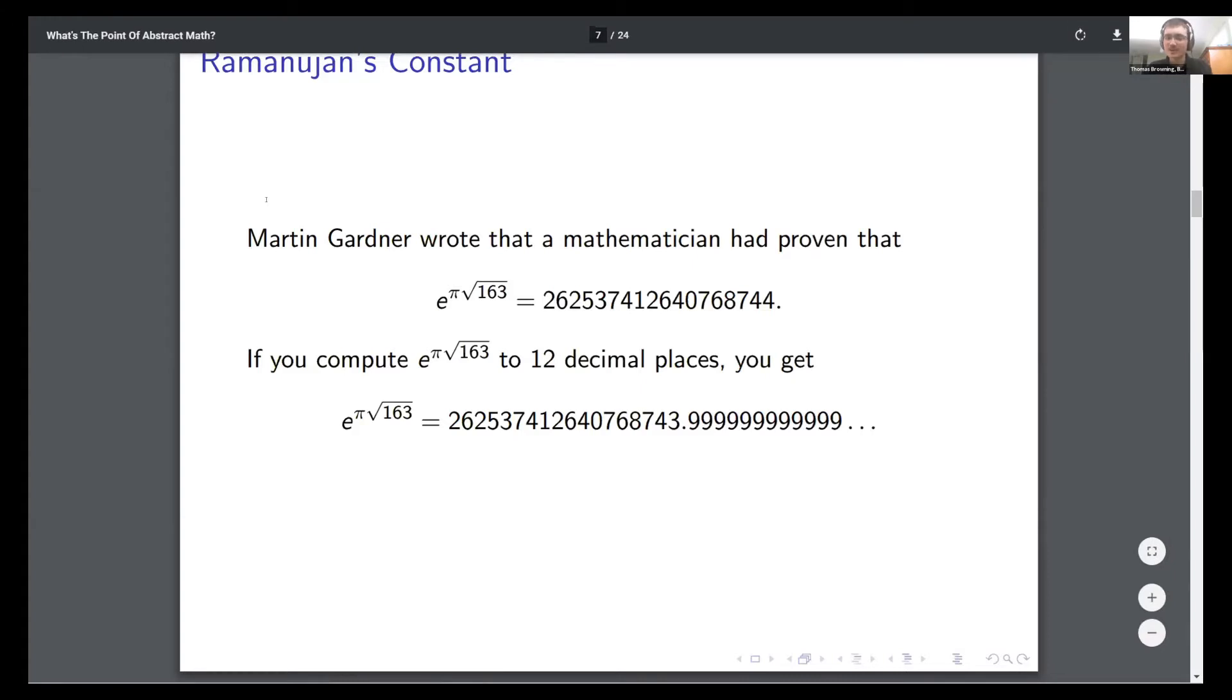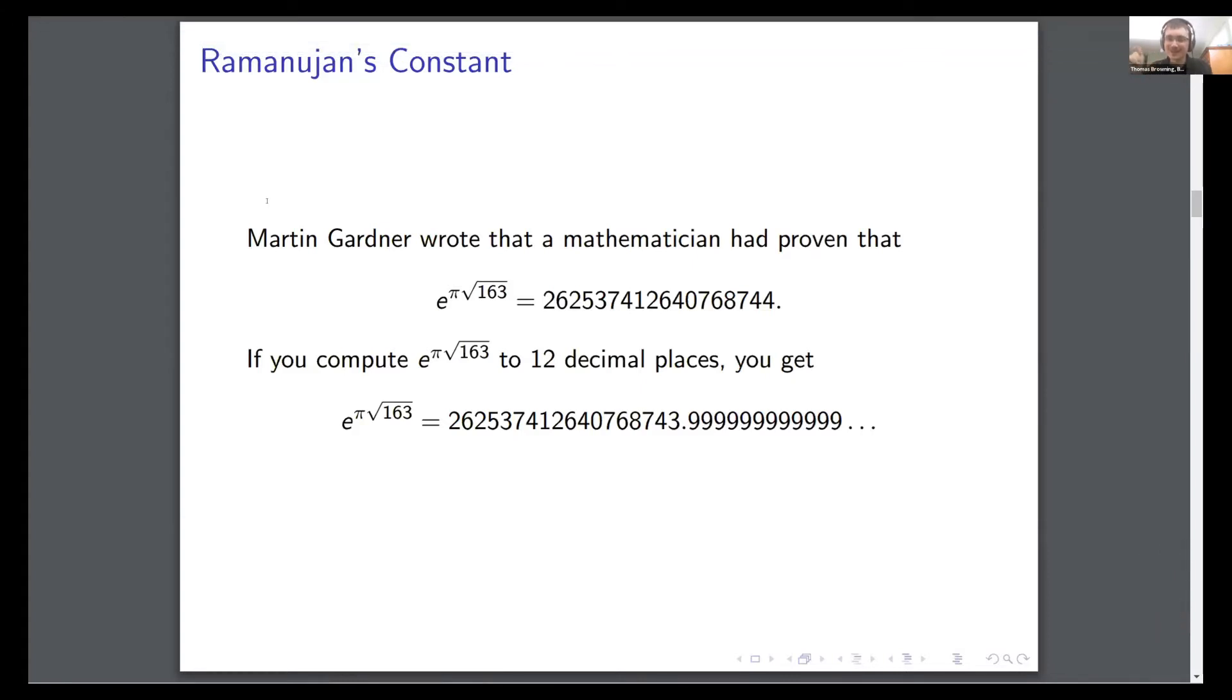If you computed this number to 12 decimal points, what you see is you get a string of 12 nines. So this number, if you computed it that far, would look pretty convincing that maybe it actually is an integer with just some rounding error. This was the second hoax. It's actually not an integer, as you might expect.